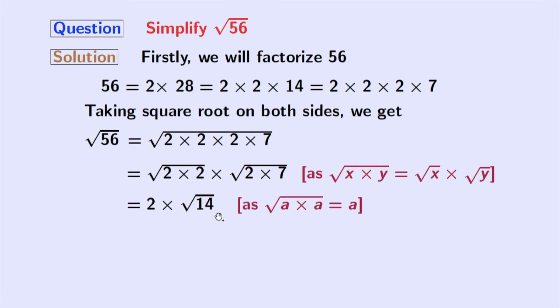In the first square root, we have used the rule of square root of a times a is equal to a. Here, a is 2. Now, after multiplication we get 2 root 14 and this is our final answer.